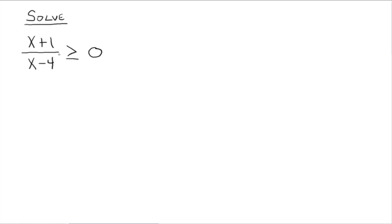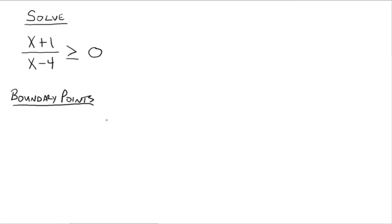Once we have one fraction on one side and 0 on the other, we're going to find what are called boundary points. Since we have just one fraction and 0 on the other side, we're looking for whatever makes the fraction undefined. Whatever real numbers make the denominator equal to 0 — that's where the fraction is undefined. So x equals 4 would be a boundary point.